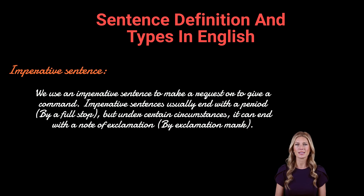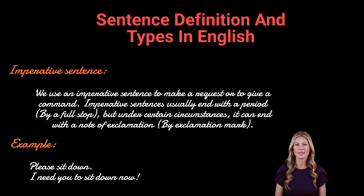An imperative sentence is used to make a request or to give a command. Imperative sentences usually end with a period, but under certain circumstances, they can end with an exclamation mark. Examples: 'Please sit down.' 'I need you to sit down now.'